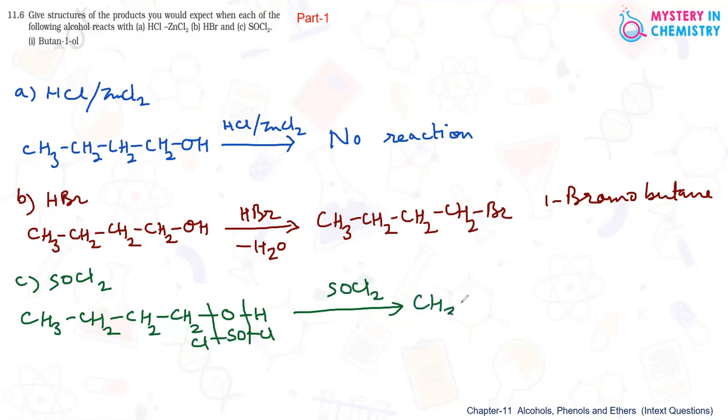And the product is clear. It is CH3-CH2-CH2-CH2Cl. That is 1-chlorobutane.